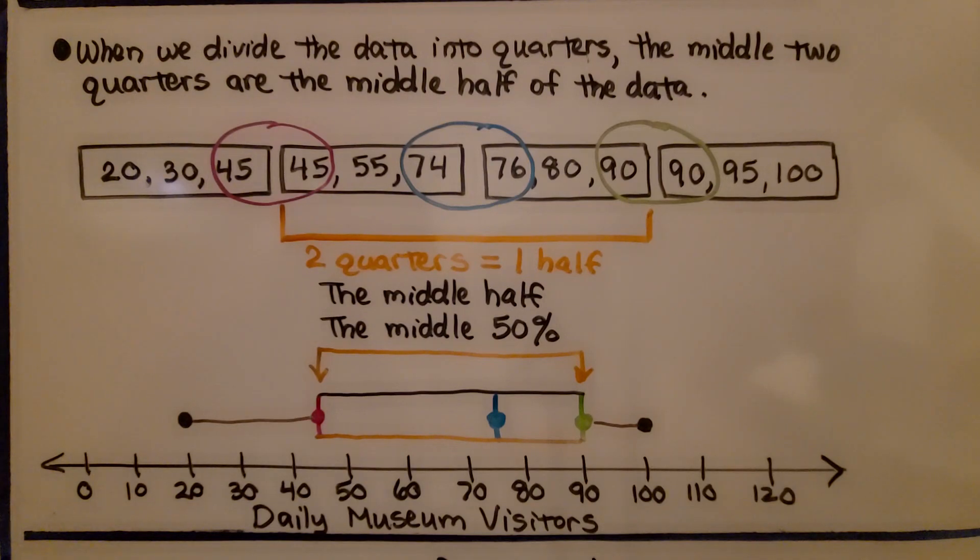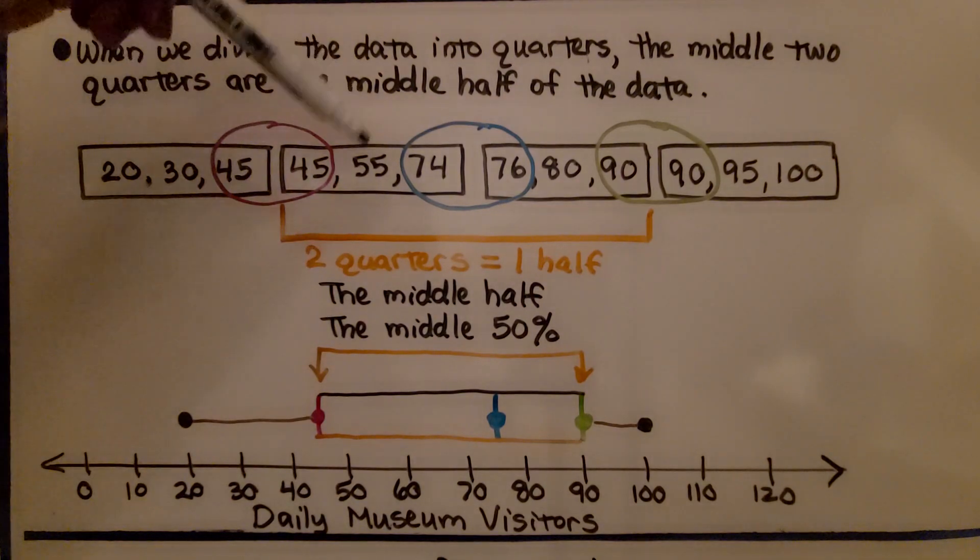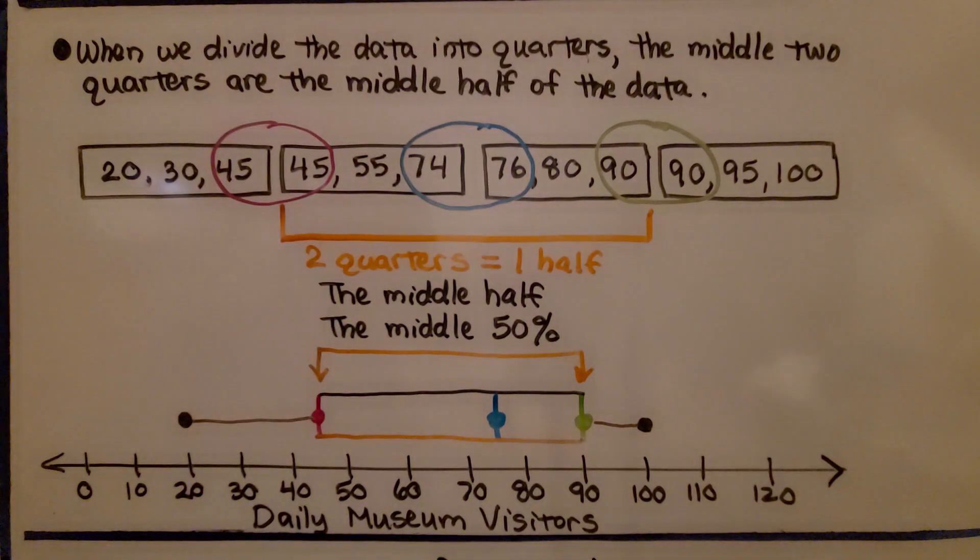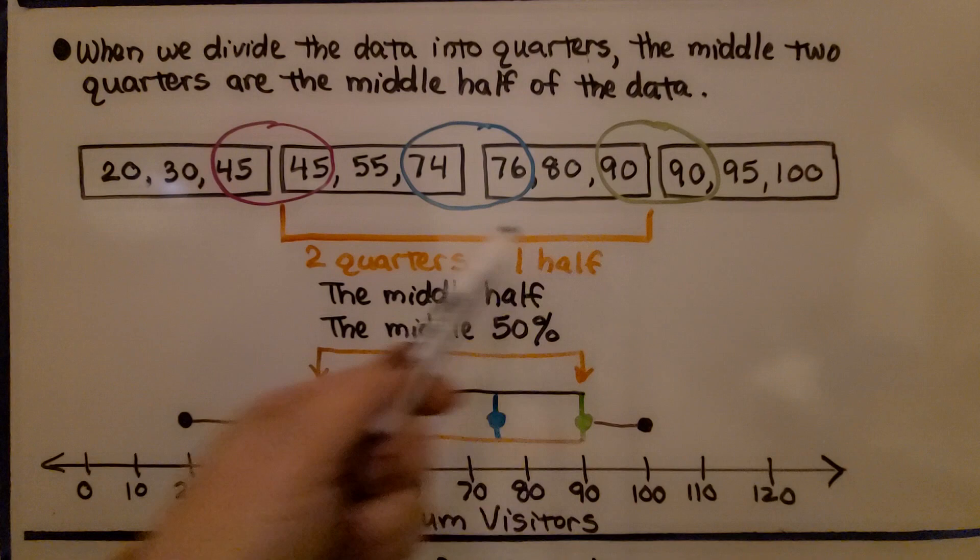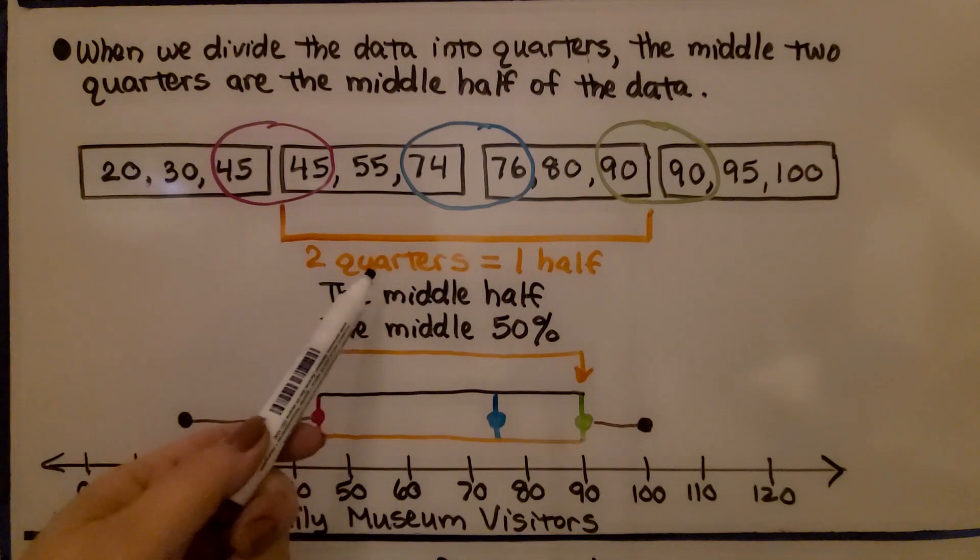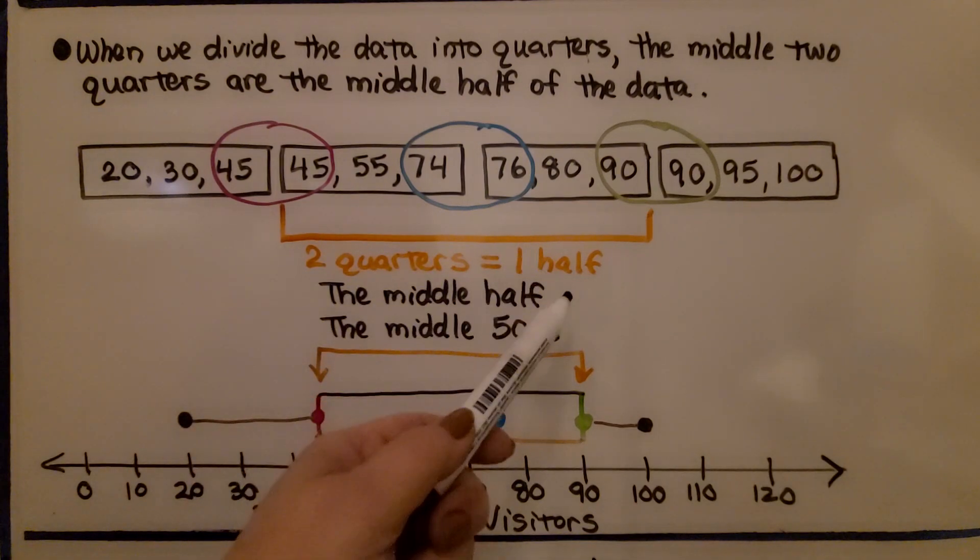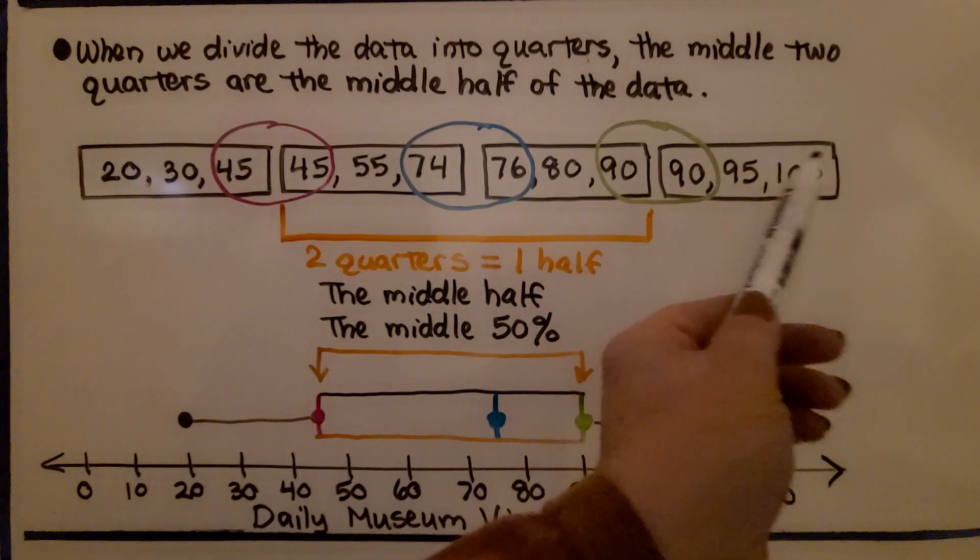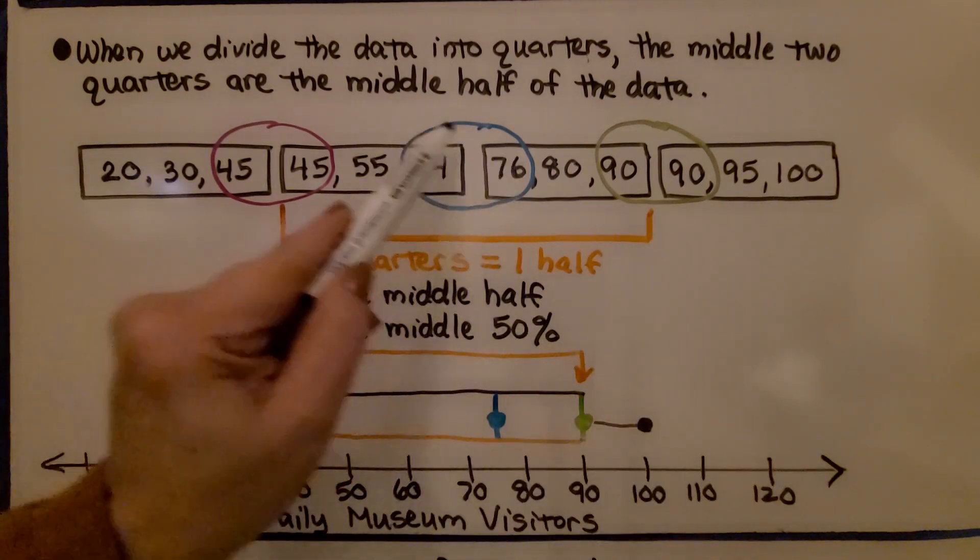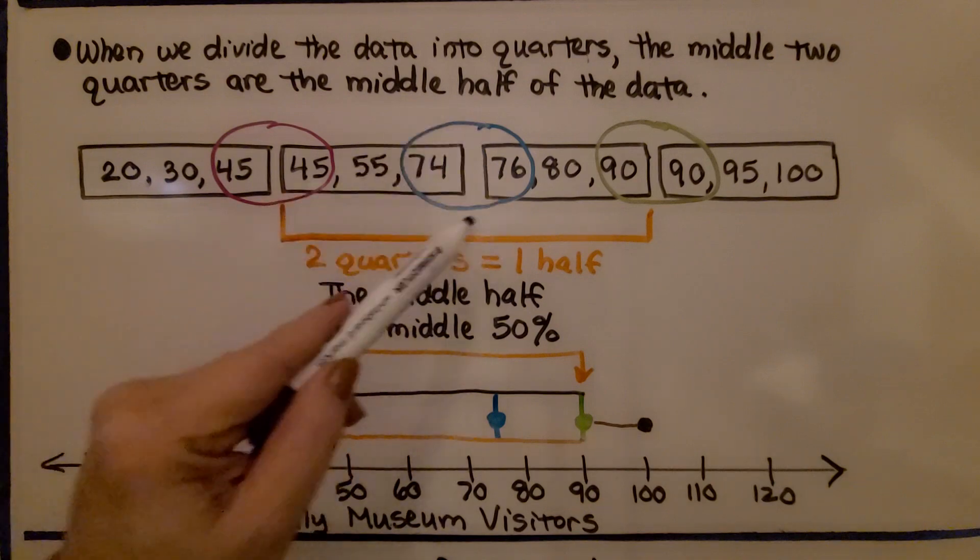when we divide the data into four quarters, we have 12 data values here. So I put three in each quarter. We have four quarters. The middle two quarters are the middle half. Two quarters is equal to one half. So we have one here, we have one here, and in the middle, that's the middle half of all the data.